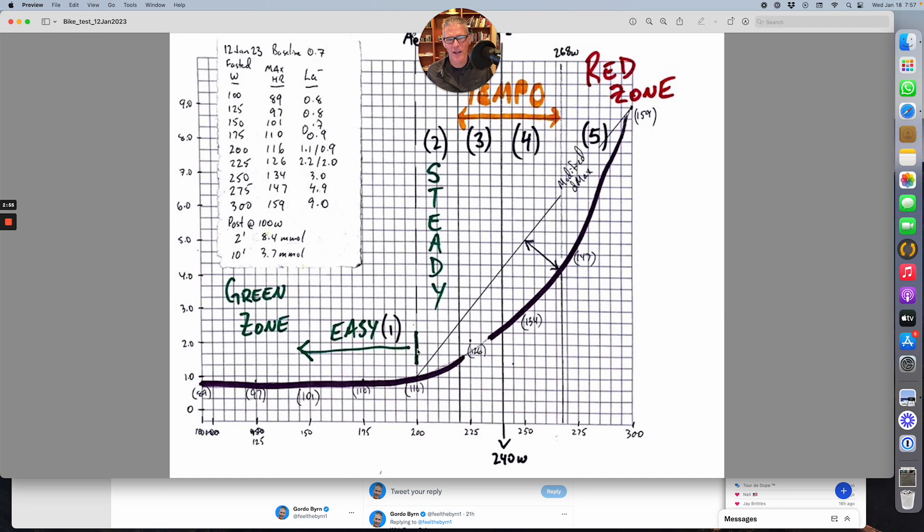So zone zero is 100, I go up 10 to 110 for zone one, and zone two is going to be about 120. Then as I move up through zone two, I can feel my breathing shift upwards. The rate is increasing.